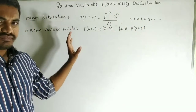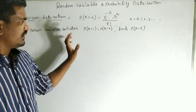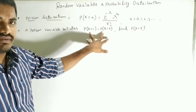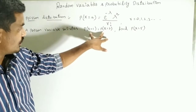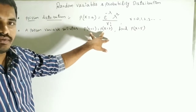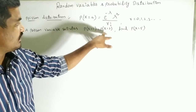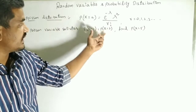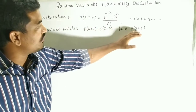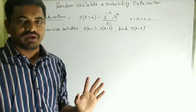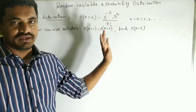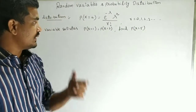We are given that two values are equal: P(X = 1) equals P(X = 2). From this condition, we will find the value of P(X = 5).